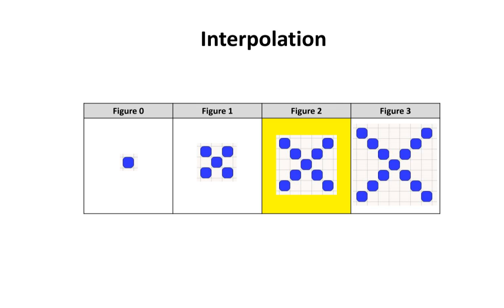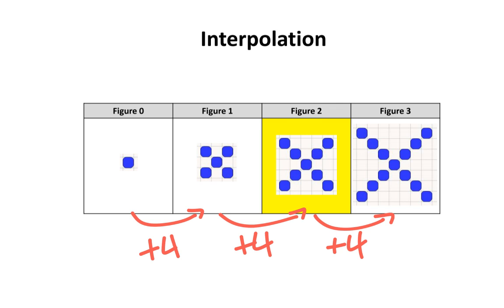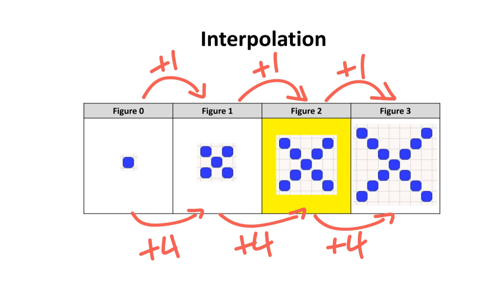Again, some of you may have used a rate of change, which was an increase of 4 blocks for every 1 figure, to work backwards to find the number of blocks in figure 2.